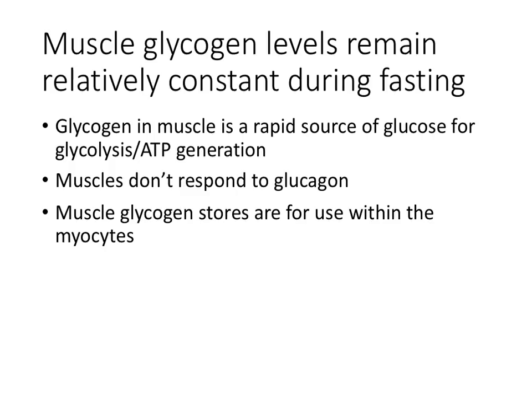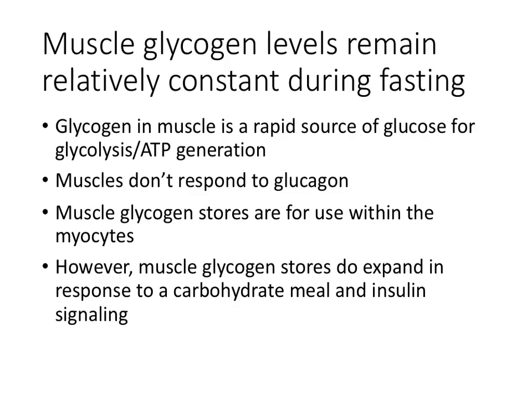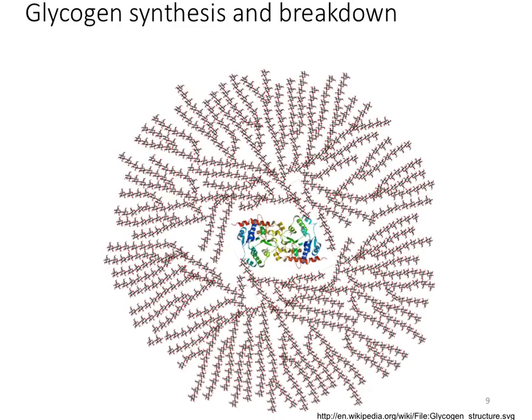Muscles don't respond to low blood glucose levels. However, muscle glycogen stores do expand in response to a carbohydrate meal and insulin signaling. Now let's talk about how glycogen is synthesized — how these balls of glycogen expand in response to insulin and plenty of glucose — and how they're broken down, releasing glucose.